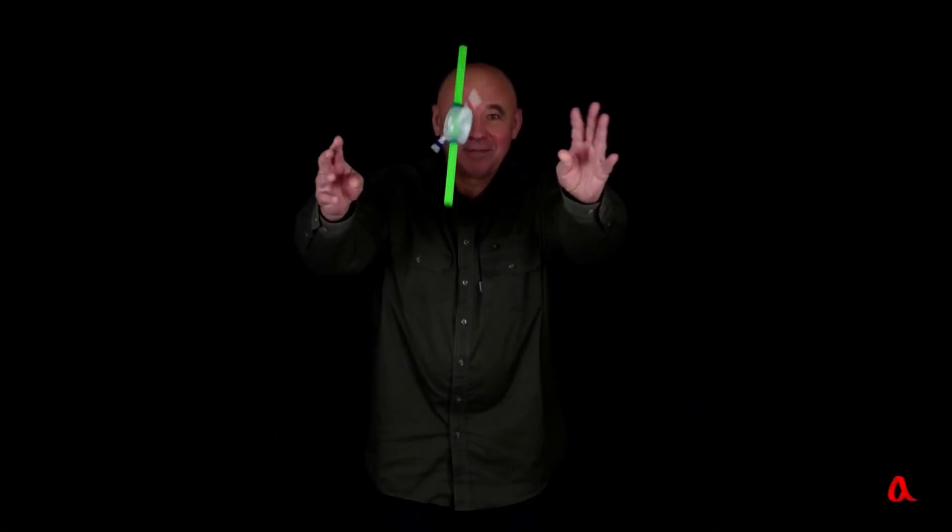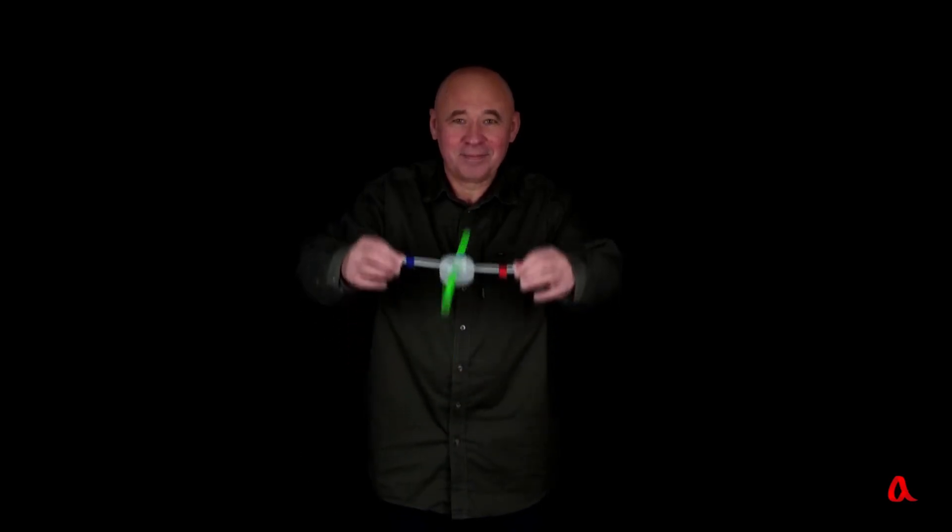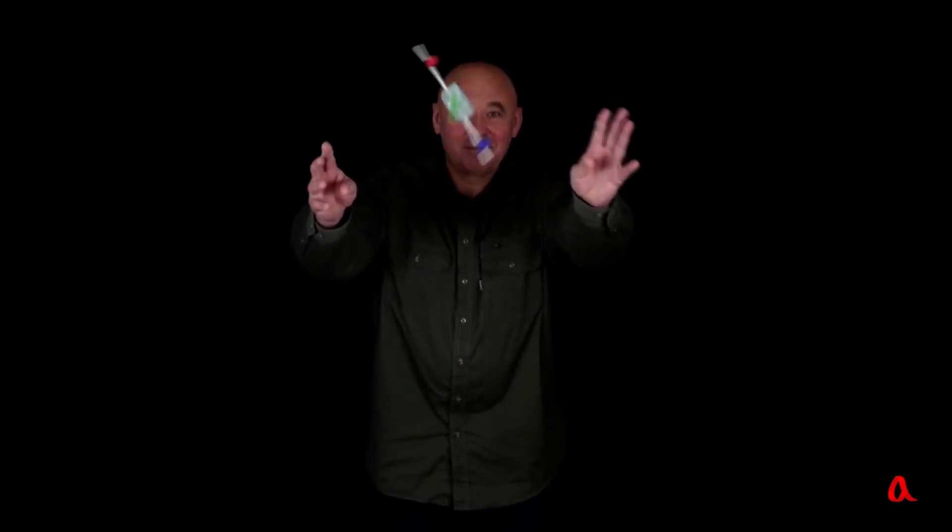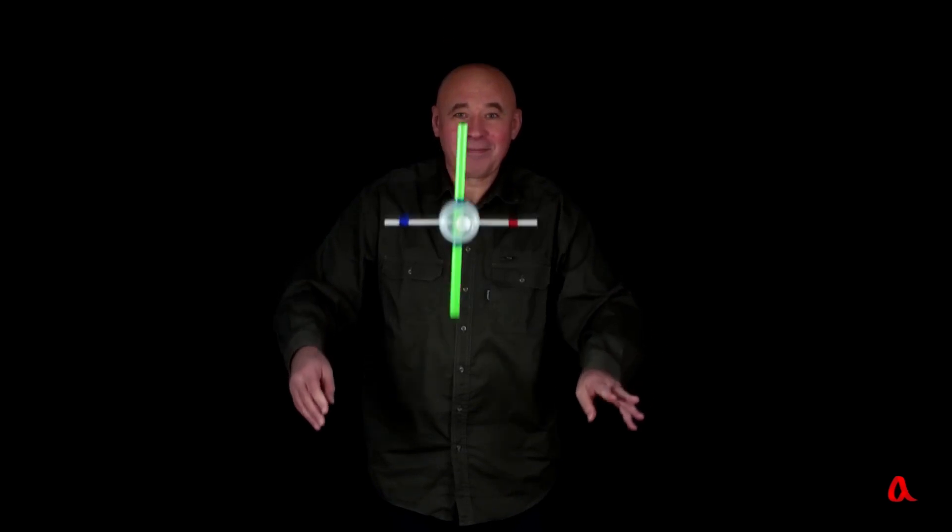Here we observe the manner in which the light crossbar flips, flips once more, and makes an attempt to flip for the third time. The substantial green crossbar rotates predominantly in one plane in strict accordance with the law of conservation of angular momentum as dictated by the principles of physics.